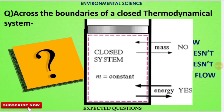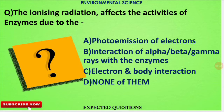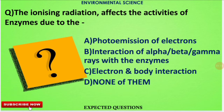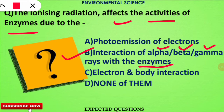The next question is: ionizing radiation affects the activities of enzymes due to which reason? The correct option is option number B. When ionizing harmful radiations like alpha, beta, and gamma rays interact with the enzymes present in our body, they affect the activities of those enzymes.